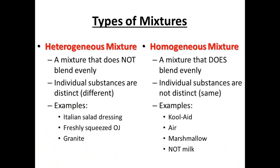Now, they can either be unevenly mixed, heterogeneous. So they do not mix evenly. Substances have distinct layers or differences that can be seen. Examples could be like Italian salad dressing, freshly squeezed orange juice, granite, heterogeneous, not evenly mixed, or homogenous.